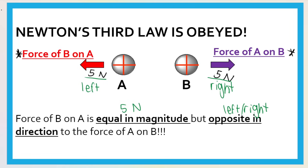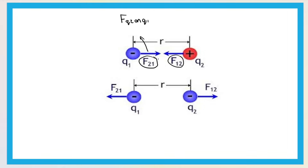Pay attention to how we label these forces. Because A and B are both positive, they repel. A moves left because of B, so the force of B on A is to the left. The force of A on B is to the right. Similarly, the force of Q1 on Q2 is to the left, and the force of Q2 on Q1 is to the right — but those forces are equal in magnitude. If one is 10 newtons to the right, the other is 10 newtons to the left.